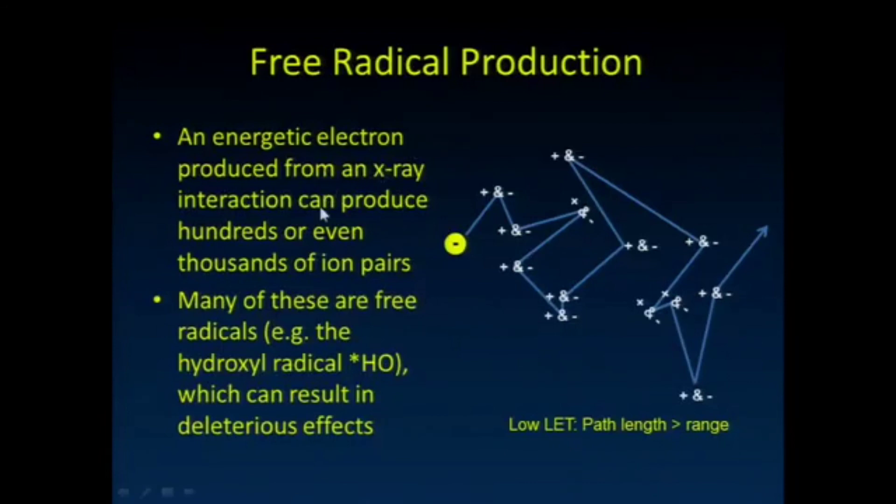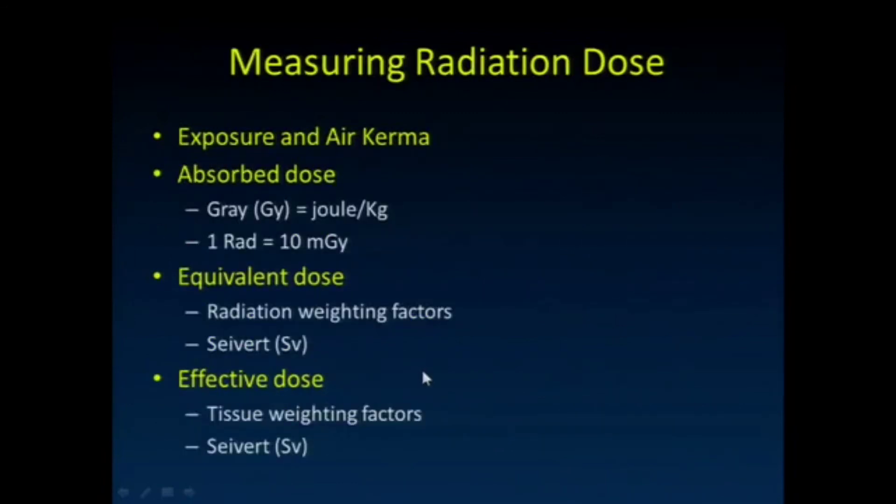Those energetic electrons produced, we've mentioned the fact that they can produce many thousands, hundreds of thousands of ion pairs. And because the body is composed of a lot of water, a lot of those are hydroxyl radicals, OH-, which can have quite a deleterious effect there.